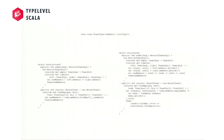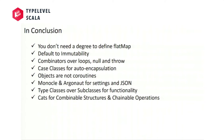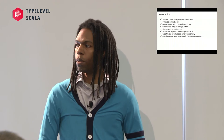In conclusion: you don't need a degree to define flat map — you can describe these things in very simple ways. Be immutable almost everywhere; inside scope it's okay, but outside of scope it usually leads to problems, especially in asynchronous applications. Use combinators instead of loops, null, and throw — it'll make life a lot easier and you'll be able to wrap your head around data flow better. Case classes do all those things for you, so they're a really good tool for getting code out quickly. Objects are not coroutines. Monocle and Argonaut for settings. Type classes are usually better than subclasses, especially with third-party libraries. And cats gives you all the tools you need for combinability, composability, and chaining of operations.